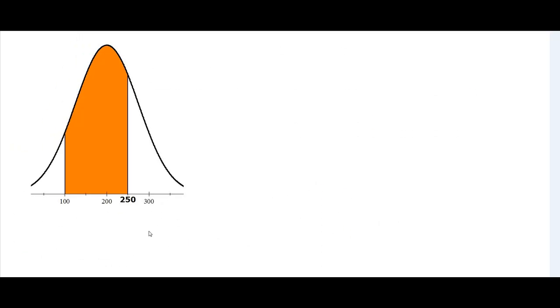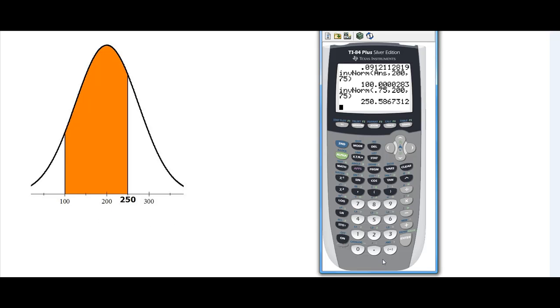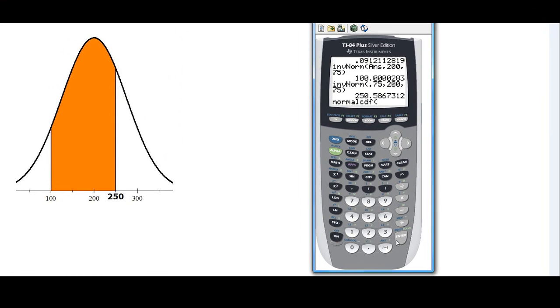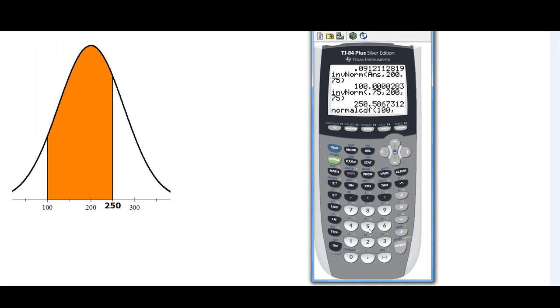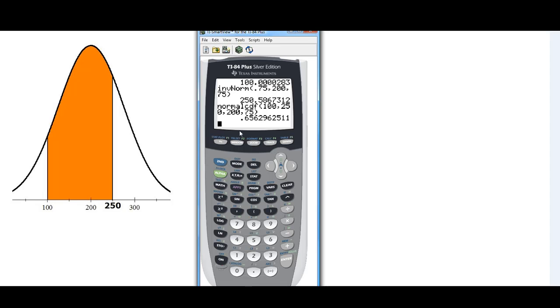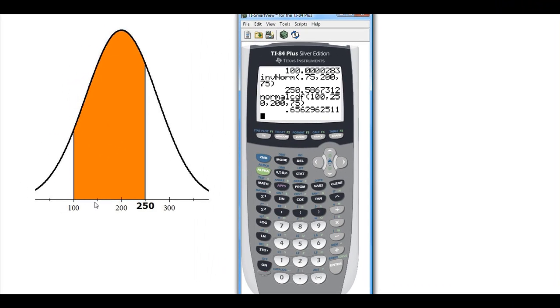Now say we have to compute the percentage of values that are between 100 and 250. So if we are using the calculator, let's go to normal cdf. Put the first endpoint, 100, then put the next one, which is 250, then put the mean in, and then the standard deviation. So here, what does it tell you, that about 65.63 percent of the values are in between these two.